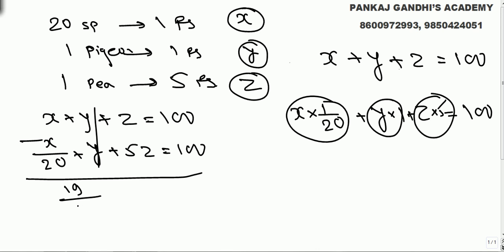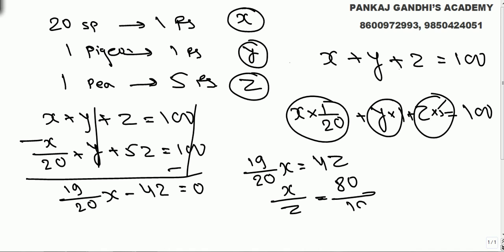What remains is 19 by 20 x minus 4z. 100 will get cancelled, so we get 19 by 20 x equal to 4z, or x upon z is 80 by 19.